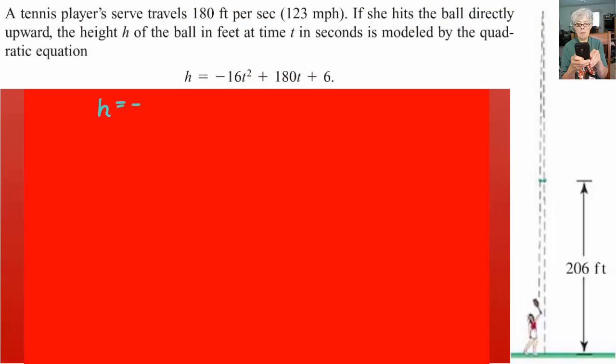So let's look at our equation. h equals negative 16t squared plus 180t plus 6, that's called the trajectory. h is how high the ball is above the ground at any time. So we're going to put 206 feet in for h and then write down the rest of the equation.